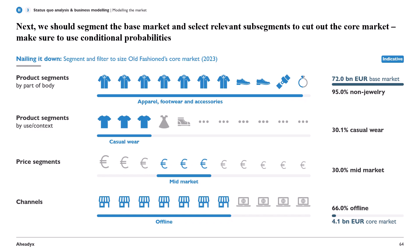Next, for the user context product segments, we are only interested in casual wear — so for example, not evening wear or sports wear, things like that. This gives us 40.1% of those 95%. Please note here that we always need to look into conditional shares.